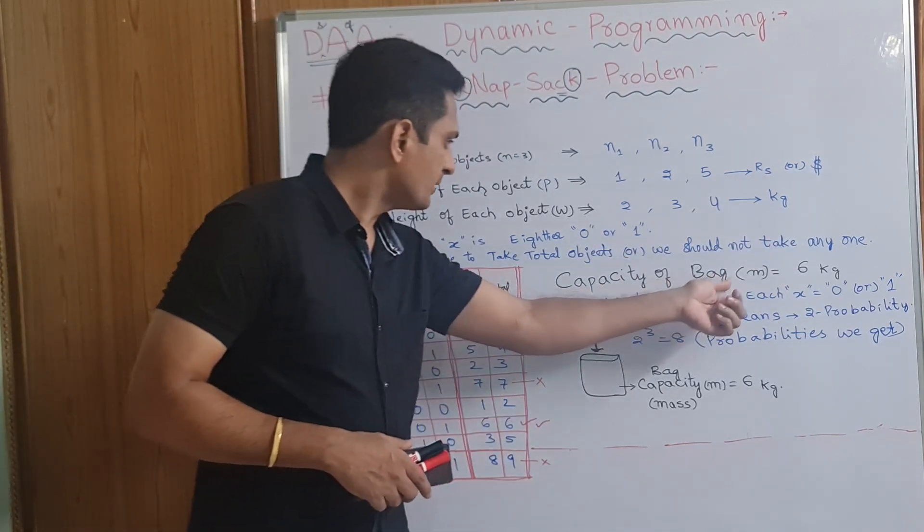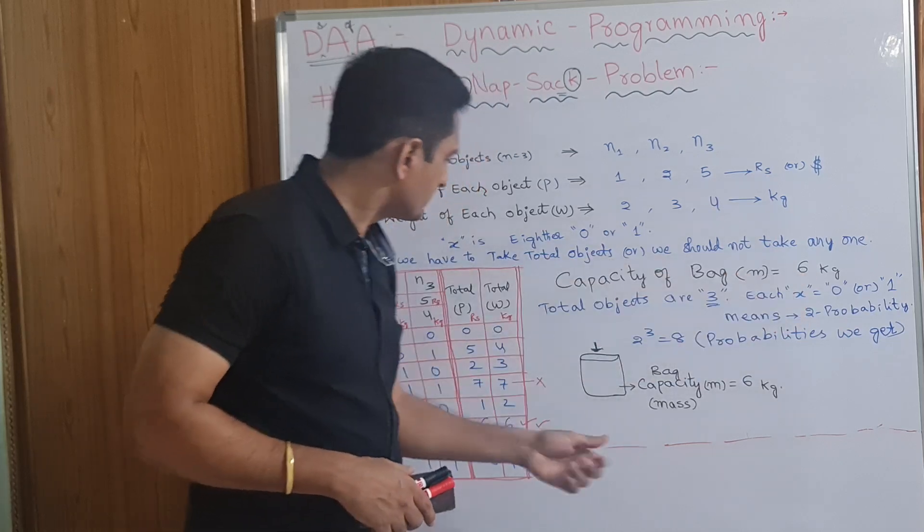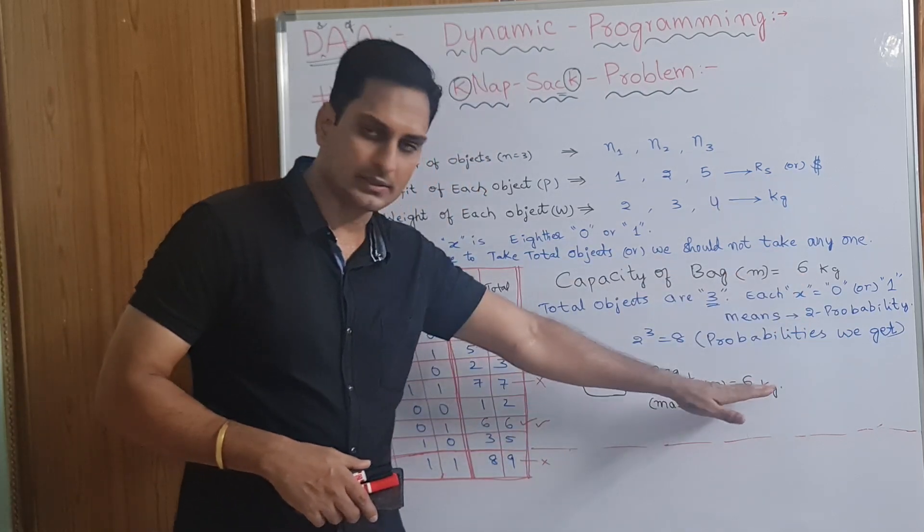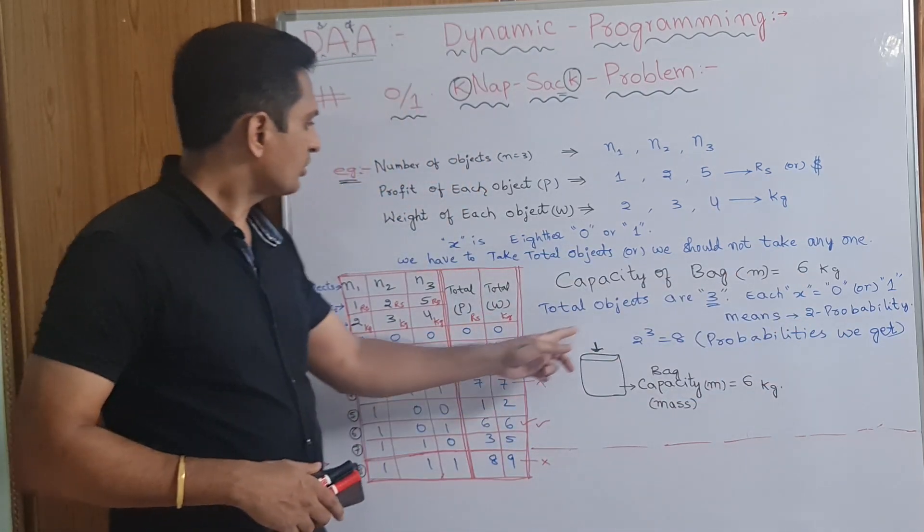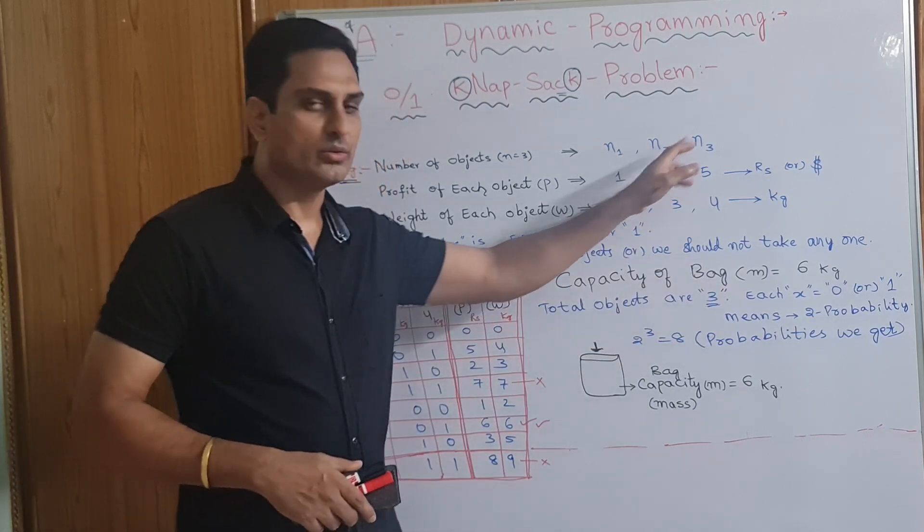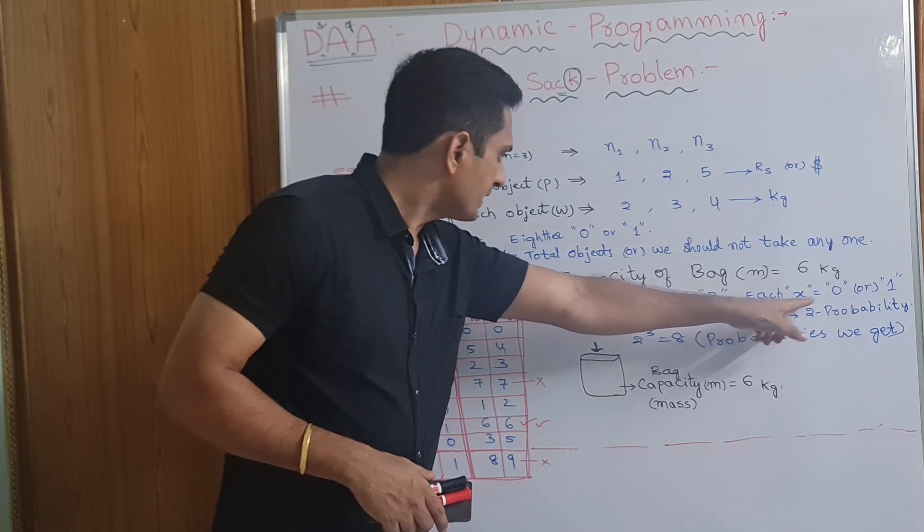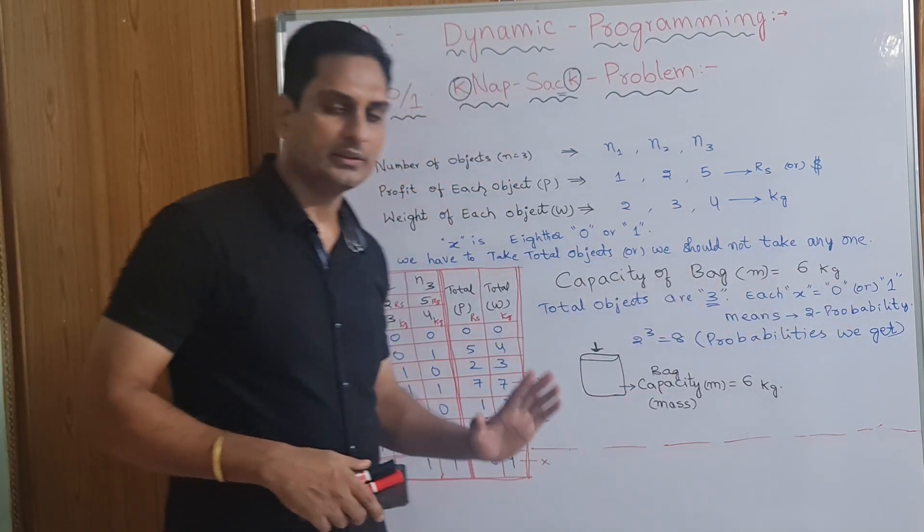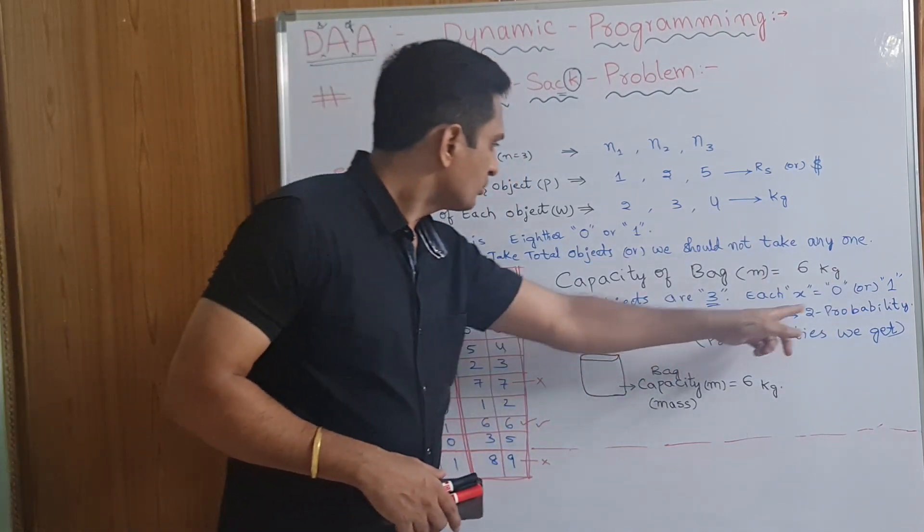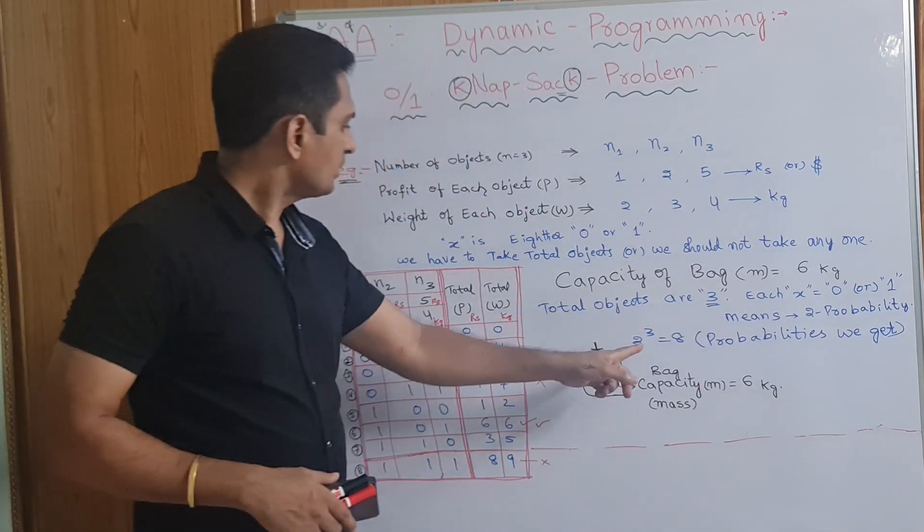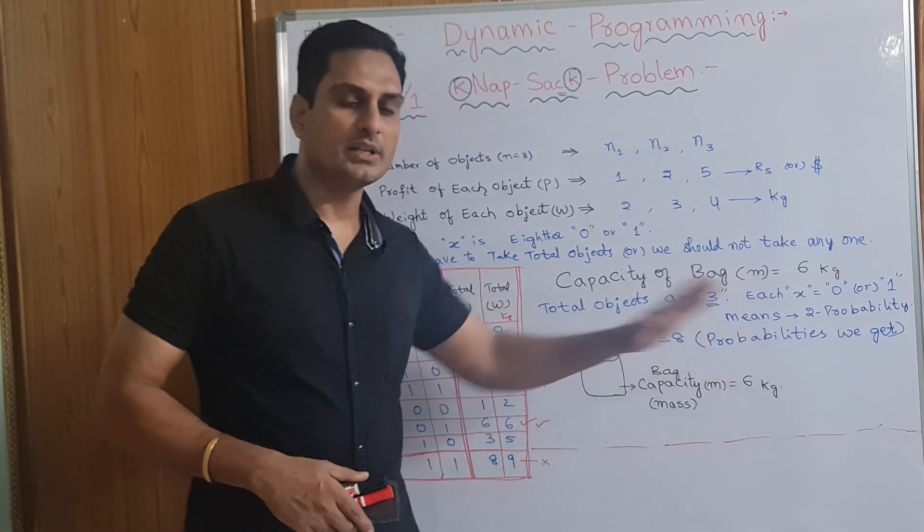So, capacity of the bag in this example is 6 kg. Bag capacity mass is 6 kg. Total objects are 3. N1, N2, N3. These are 3. Each X is 0 or 1. So, means 2 probabilities we have. Total 2 power 3, 8 probabilities we will get. After seeing this box, we will come to know.